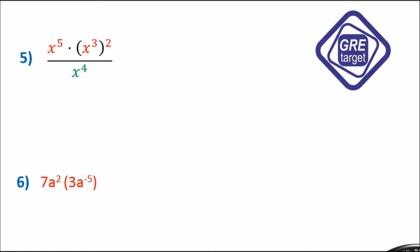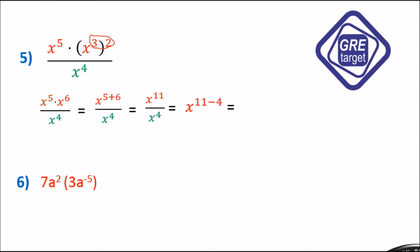Example 5: x raised to 5 times x raised to 3, the whole raised to 2, divided by x raised to 4. The first term stays, and for the second term we apply the power rule: 3 times 2 equals 6, giving x raised to 6. Applying the product rule: x raised to 5 plus 6 divided by x raised to 4 gives x raised to 11 divided by x raised to 4. Applying the quotient rule: 11 minus 4 gives x raised to 7.